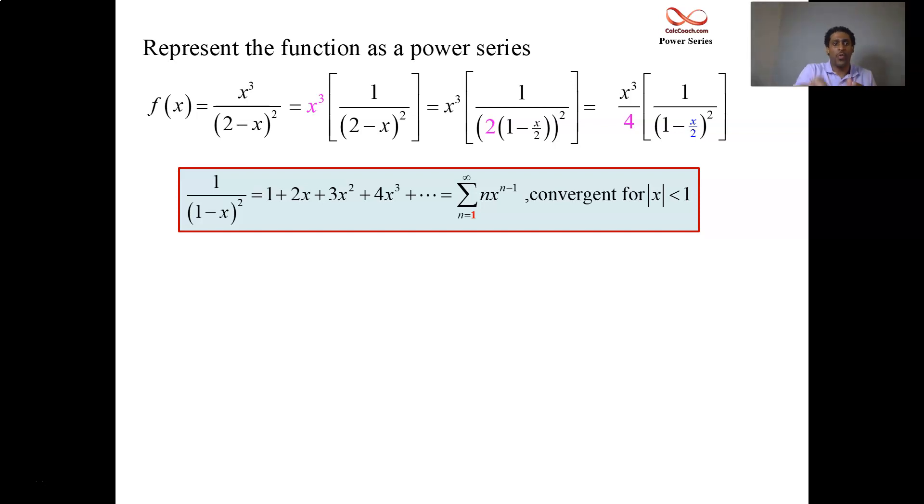All we need to do is rip out the x's in number two on the list and put in x over twos. So instead of 1 plus 2x, we'll have 1 plus 2 times x over 2 plus 3 times x over 2 quantity squared plus 4 times x over 2 quantity cubed. Don't forget, though, we have to multiply by x cubed over 4. In the summation, instead of x to the n minus 1, we have x over 2 to the n minus 1.